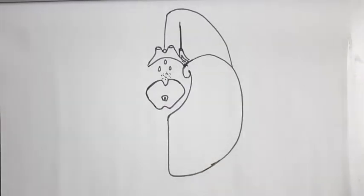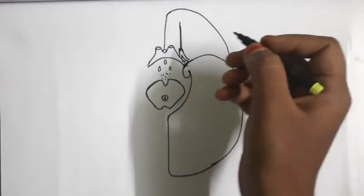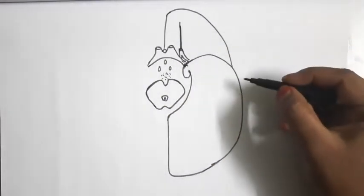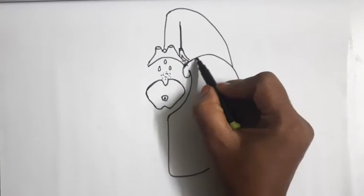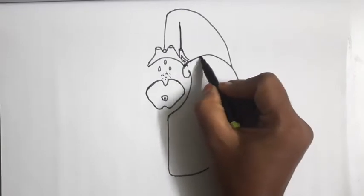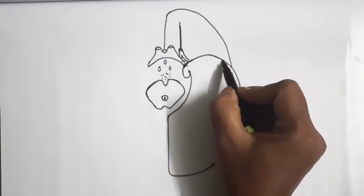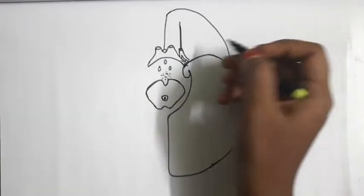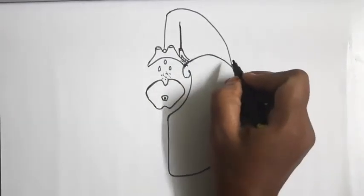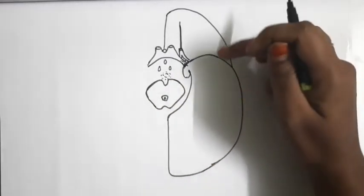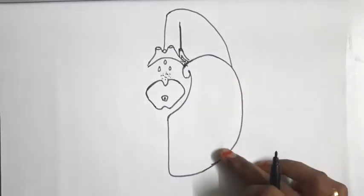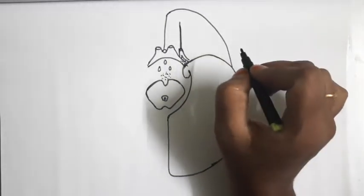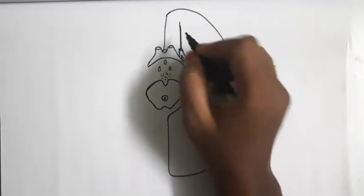This is the inferior surface of the cerebrum. First, this inferior surface of the cerebrum is divided into two parts by means of a lateral stem of lateral sulcus. This is the stem of lateral sulcus, and here we will see the anterior perforated substance. This stem of lateral sulcus will divide into an anterior orbital part and a posterior tentorial part.